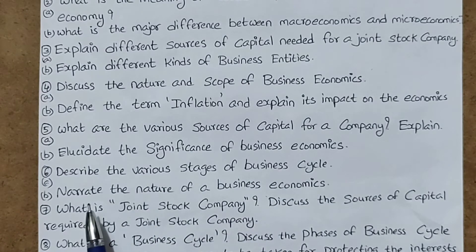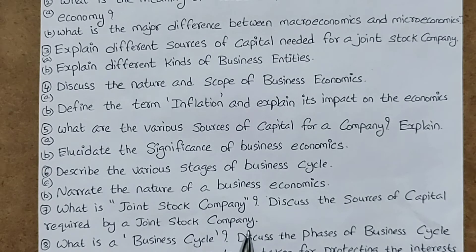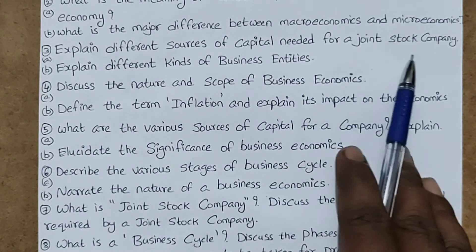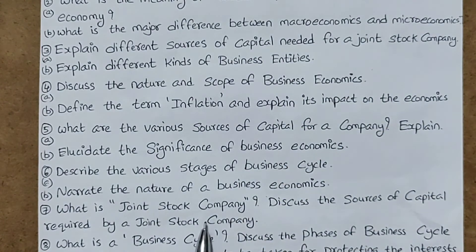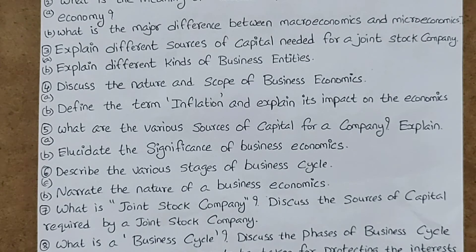Next: narrate the nature of business economics — again, you are getting a question on business economics. Also: what is a joint stock company? Discuss the sources of capital required by a joint stock company. Previously we saw 'capital needed for a joint stock company,' and here the examiner is asking the same content in a different way. That is why I wrote these questions — so you should know how each content can be asked in many ways.